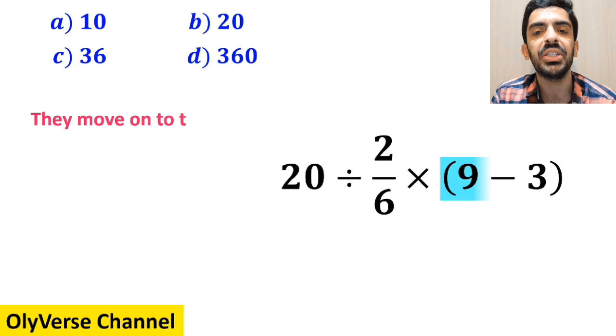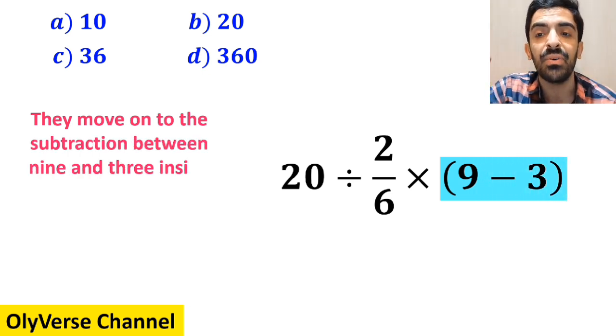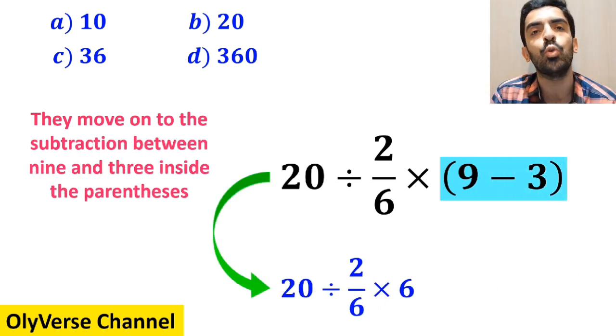In the next step, they move on to the subtraction between 9 and 3 inside the parenthesis and simplify this expression to 20 divided by 2 over 6 times 6.